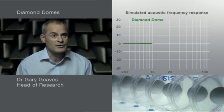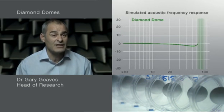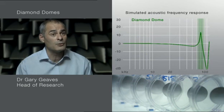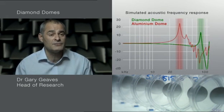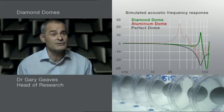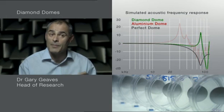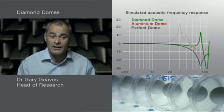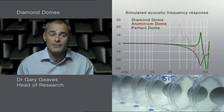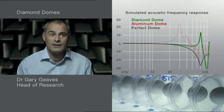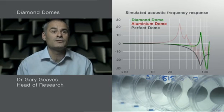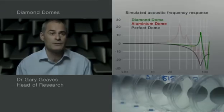By using diamond, we were able to create a tweeter that breaks up at 70 kilohertz compared with a value of 30 kilohertz with the standard aluminium domes. What this means is that when you compare the response of the diamond tweeter with the perfect hypothetical rigid tweeter, the responses are very similar below 20 kilohertz. We think there's a dramatic improvement in performance that results.